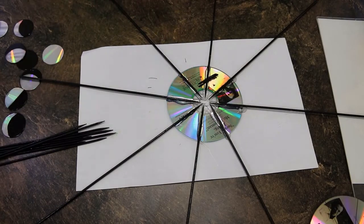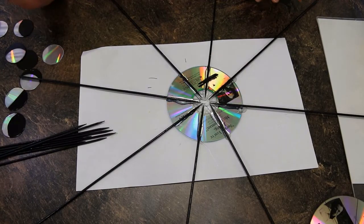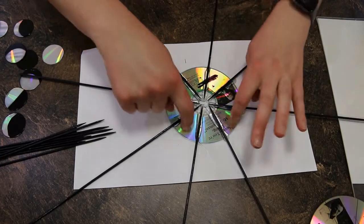Okay, so now that we have finished gluing the long skewers, we're going to glue the short skewers right in the in-between space.